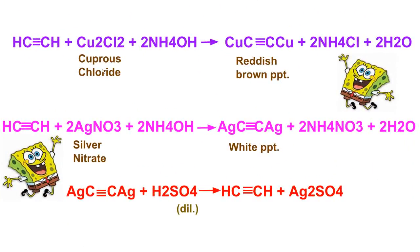Acetylides of copper and acetylides of silver are obtained by passing acetylene through the ammonical solution of cuprous chloride and silver nitrate respectively. As you can see here, this is ethyne, also called acetylene. When it is treated with cuprous chloride in ammonical solution, a reddish-brown precipitate of cuprous acetylide is obtained, with byproducts ammonium chloride and water. Similarly, when silver nitrate is treated with ethyne in ammonical solution, a white precipitate of silver acetylide is produced, with byproducts ammonium nitrate and water.